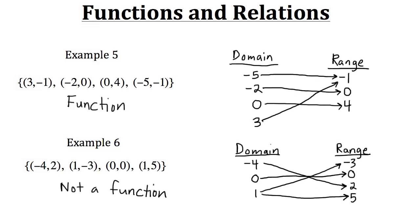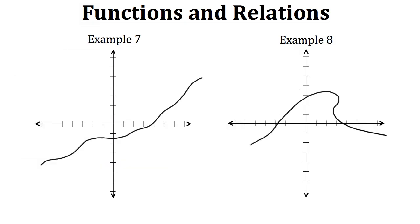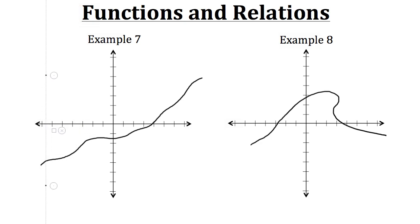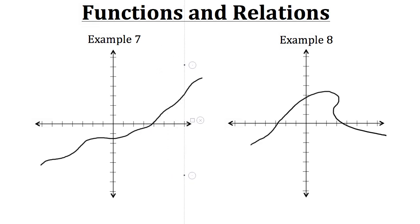Now let's take a look at another way of determining if a relation is a function. For these two examples, we have graphs. If we're given a graph of a relation, we can use what's called the vertical line test to see if the relation is a function. We take a vertical line and sweep it across the entire graph, and if at any point the vertical line touches more than one output on the relation, then it's not a function.